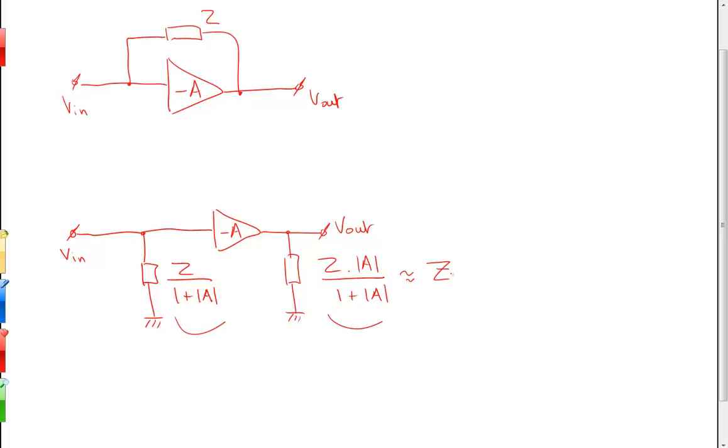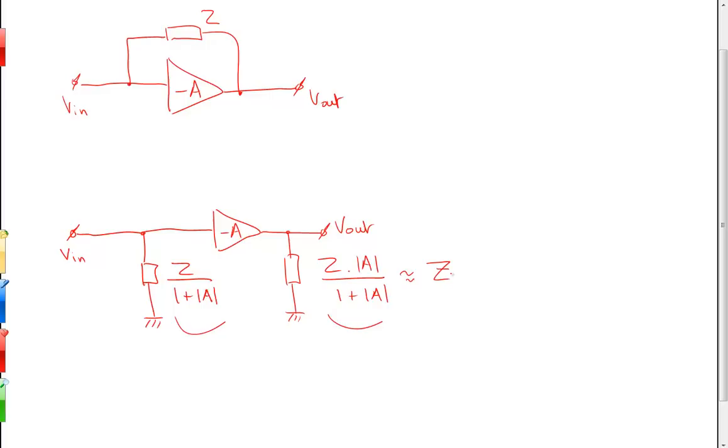To do this, we apply a test voltage Vin at the input node and monitor the current flowing out of that source, equal to Iin. The equivalent input impedance is equal to Vin divided by Iin - that's the impedance presented to the source.